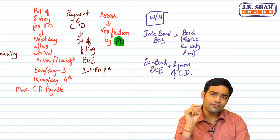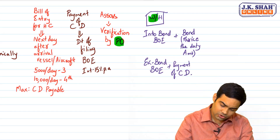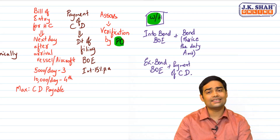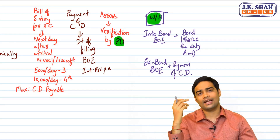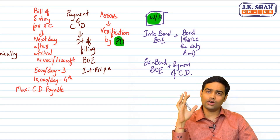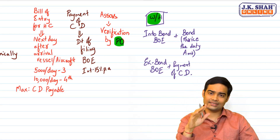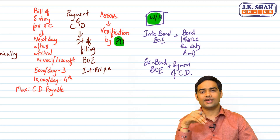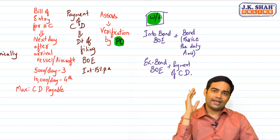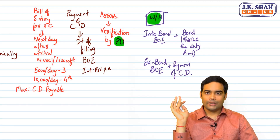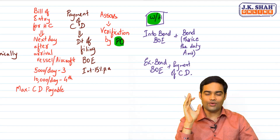For your syllabus, warehousing details are not included — you only need to know the into bond entry with bond of thrice the duty amount, filing of ex-bond bill of entry, and payment of custom duty. No other warehousing points are required.